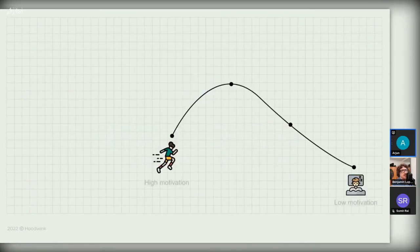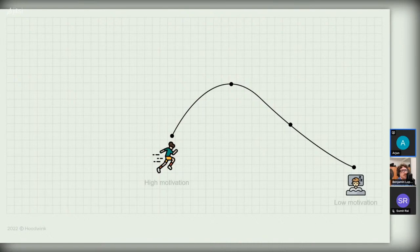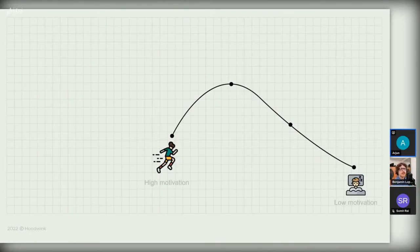I think we're all familiar with this cycle — it's happened to all of us where we get an intense motivation to do something. Like, maybe I decide to start running from tomorrow with full motivation, but what usually ends up happening is I keep it up for a day or two, or maybe a week, and slowly my motivation starts sagging and I fall back into my old patterns. Some people might hold motivation for a few weeks, but eventually it falls back.